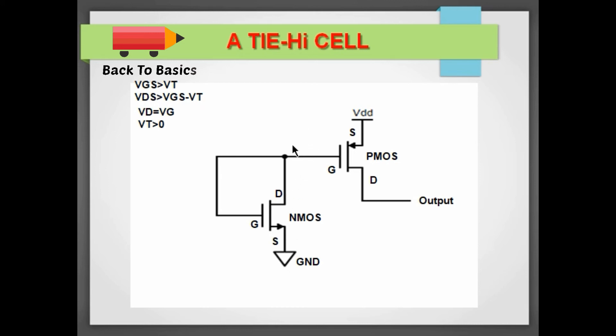So this node can only be low and not high. So the low voltage at gate of the PMOS transistor will keep it on, and it will keep acting as a pull-up transistor and will give us a constant output all the time. So this is how a tie-high cell works.